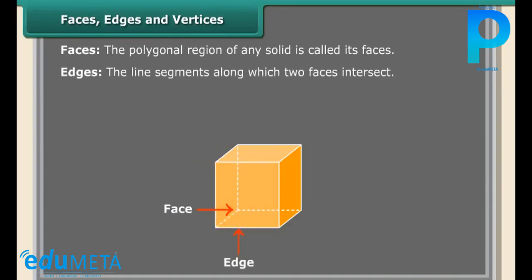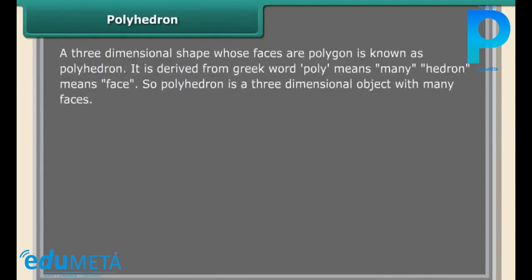Faces, edges, and vertices. Faces: the polygonal region of any solid is called its faces. Edges: the line segments along which two faces intersect. Vertices: the points at which three or more faces meet.